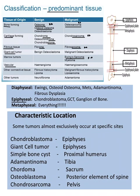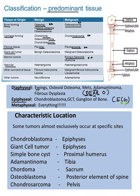For epiphyseal tumors, remember 'ECG': epiphyseal tumors are Chondroblastoma and Giant cell tumor. For diaphyseal tumors, remember 'DEAR O': D for diaphysis, E for Ewing sarcoma, A for adamantinoma, R for round cell tumor, and O for osteoid osteoma. All remaining tumors come under the metaphysis, so no need to remember those separately.